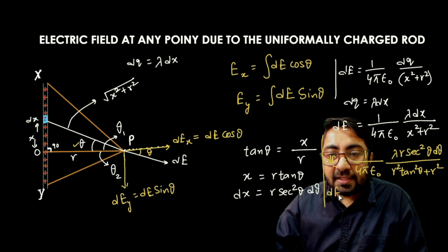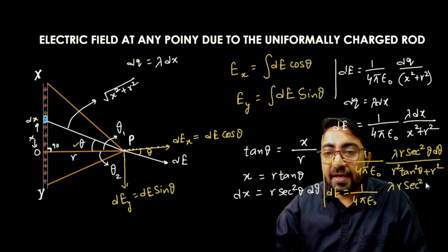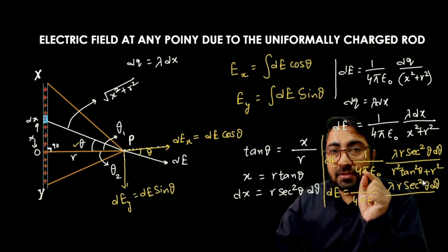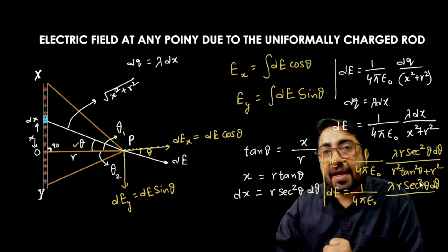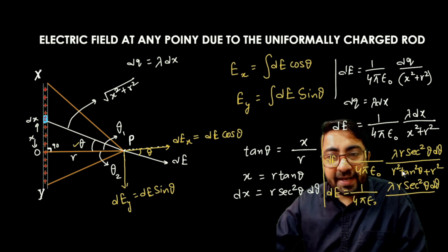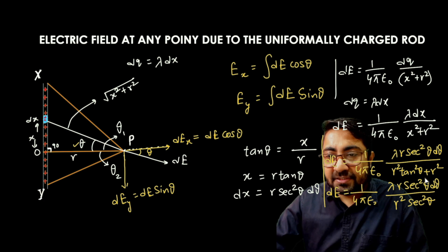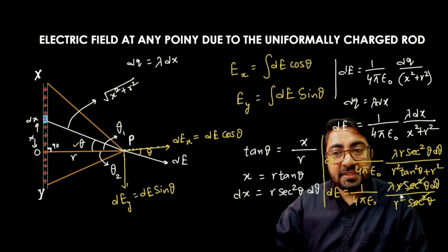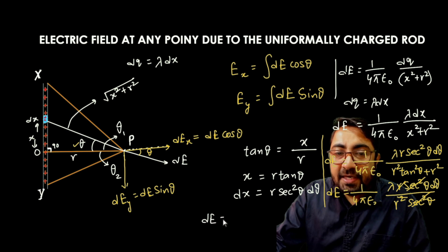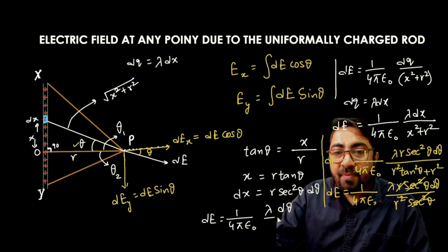After simplifying: from the denominator, take r squared common, leaving tan squared theta plus 1 in the bracket. By the trigonometric identity, tan squared theta plus 1 equals sec squared theta, giving r squared sec squared theta in the denominator. The sec squared theta cancels from both sides, and one power of r cancels. Finally, dE equals (1/4πε₀) times (lambda d theta) divided by r.